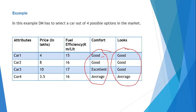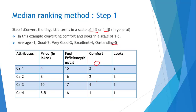Applying this conversion: good becomes 2, 2, and similarly 2, 2. Average is converted to 1, and excellent becomes 4. So the numerical values are 2, 2, 4, 1 for comfort and 2, 2, 2, 1 for looks. This completes step number 1 — conversion of linguistic terms into numerical values.